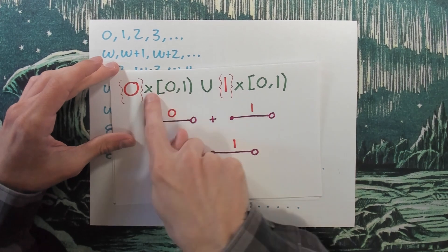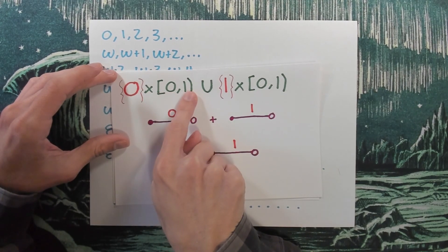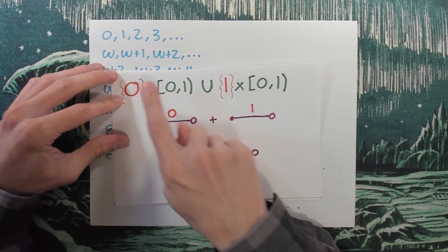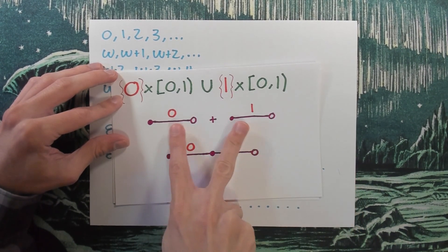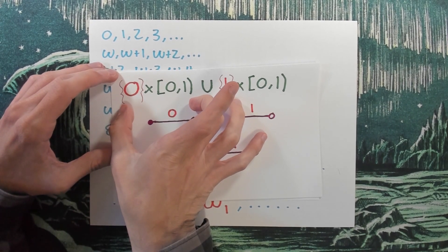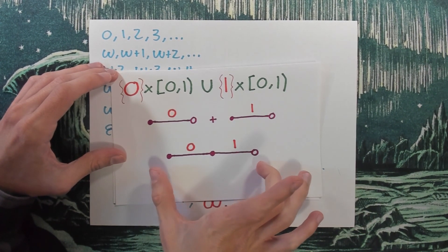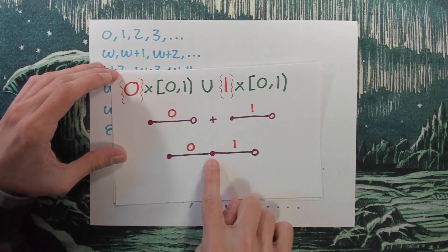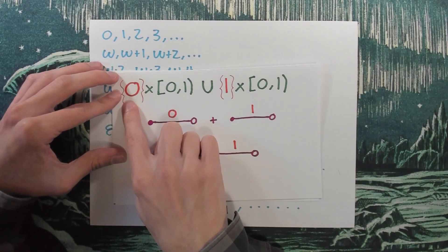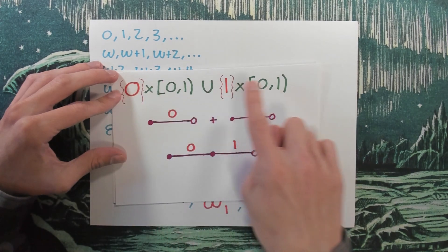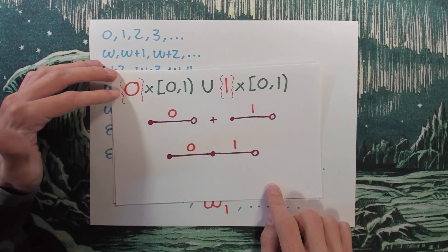What we're really talking about is taking the first interval and tagging it with the name 0. Then what comes after 0 is 1, so I could take this interval and tag it with the name 1. What I mean by adding them together is combining all of these points into a single set — tagged with 0 and tagged with 1. I could take this further: add three intervals with tags 0, 1, 2, or four with tags 0, 1, 2, 3. In fact, I could add infinitely many of them together.